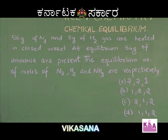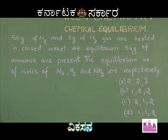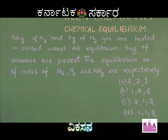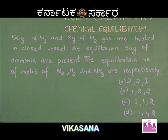56 grams of nitrogen and 8 grams of hydrogen gas are heated in a closed vessel. At equilibrium, 34 grams of ammonia are present. The equilibrium number of moles of nitrogen, hydrogen, and ammonia are respectively: option A, 2, 2, and 1.